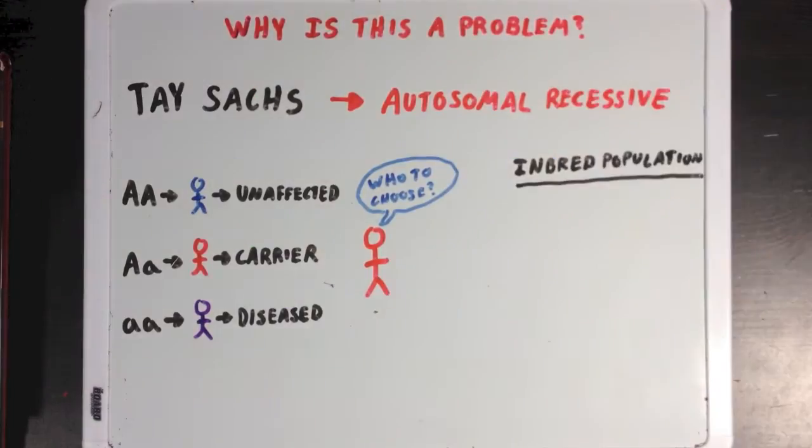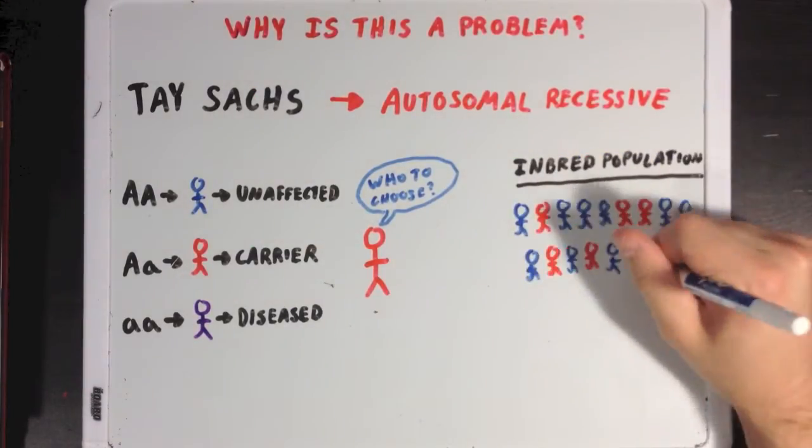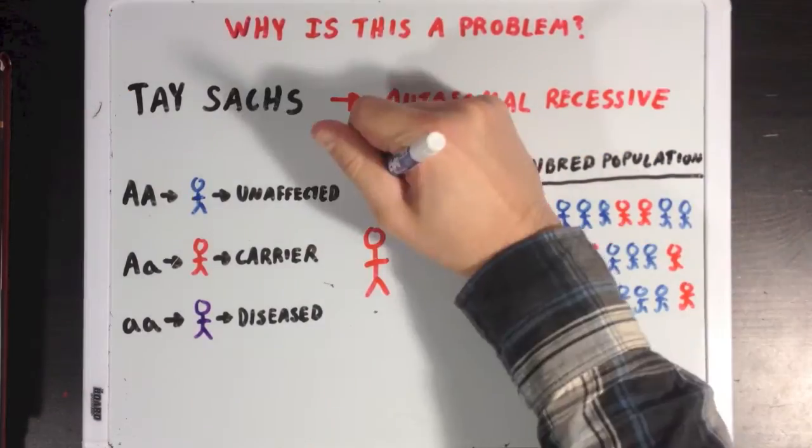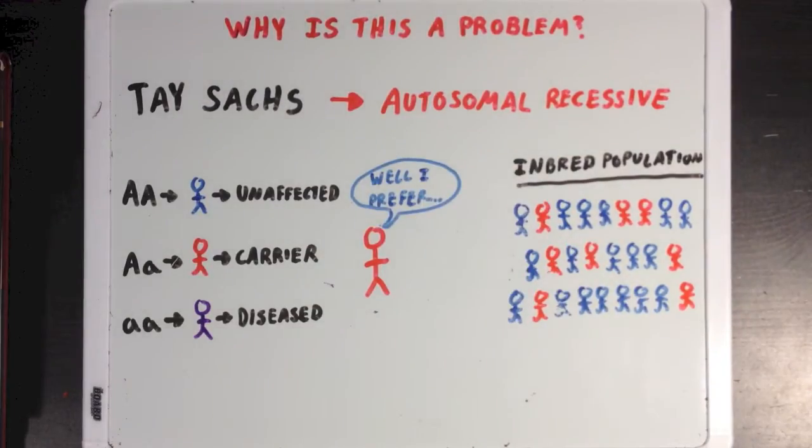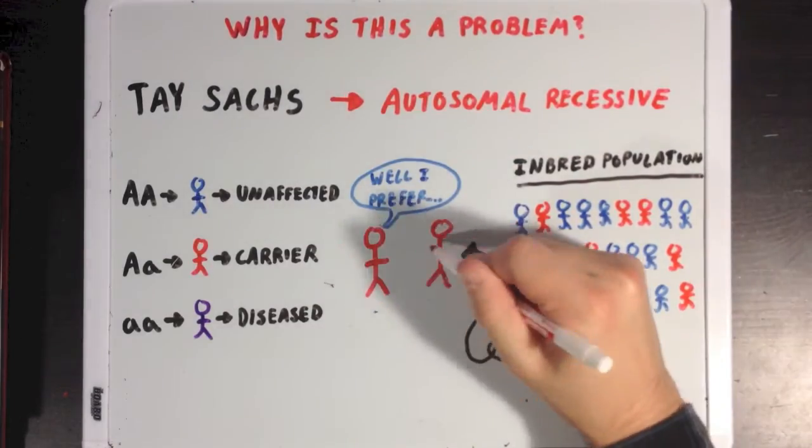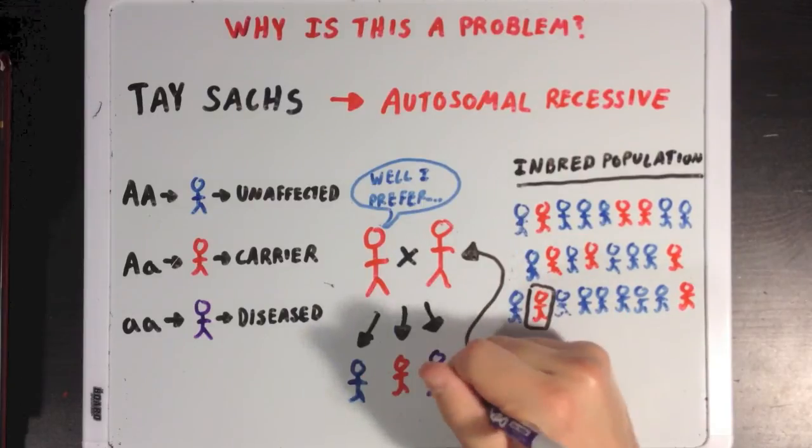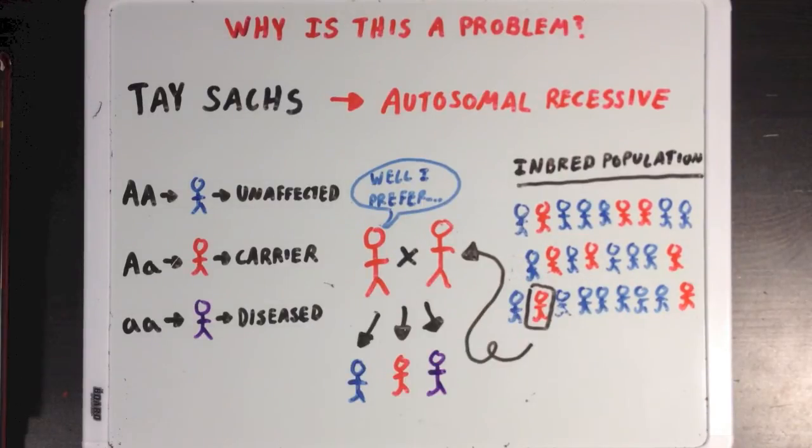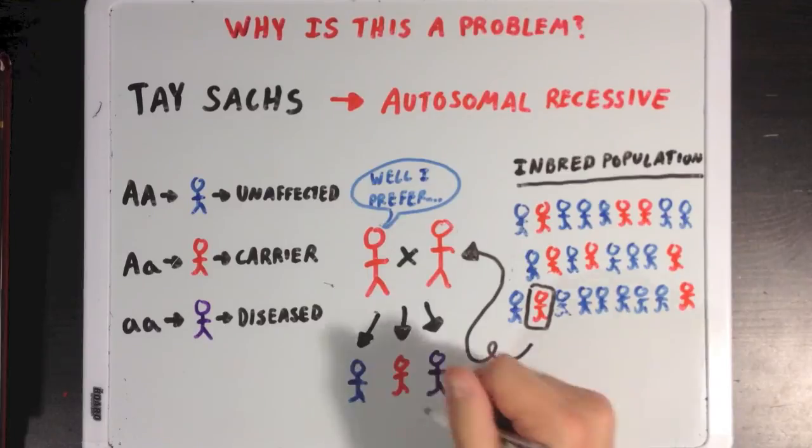Now if we look at an inbred population where a bunch more people could be carriers for the disease, the chances of our guy choosing a mate that's also a carrier are a little higher. So more of his children will be carriers for the disease, but there's also a chance that some of his offspring may get two copies of the gene and actually be affected by the disease.